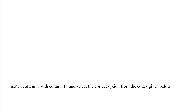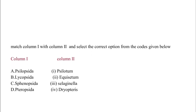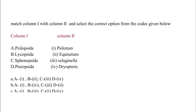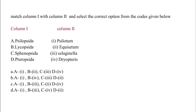Match Column I with Column II and select the correct option. Column I: Psilopsida, Lycopsida, Sphenopsida, Pteridopsida. Column II: Psilotum, Equisetum, Selaginella, Dryopteris. The correct answer is Option C: Psilopsida matches with Psilotum, Lycopsida matches with Selaginella, Sphenopsida matches with Equisetum, and Pteridopsida matches with Dryopteris.